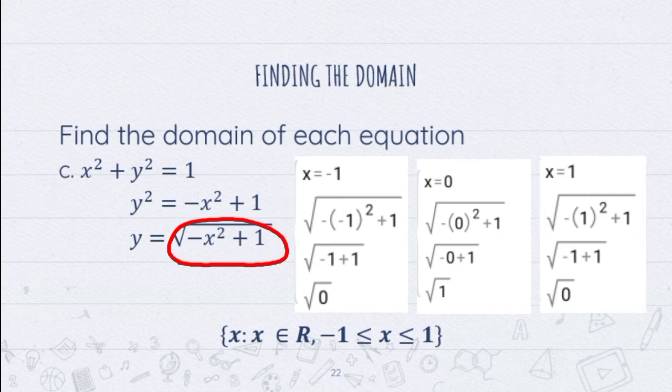Therefore, our domain here is negative 1 and positive 1 including the numbers in between them. Or in symbol, we have x as an element of r where negative 1 is less than or equal to x and x is less than or equal to 1.